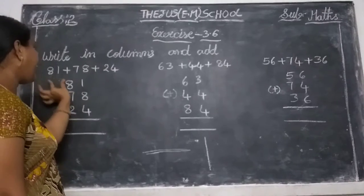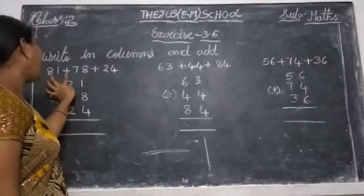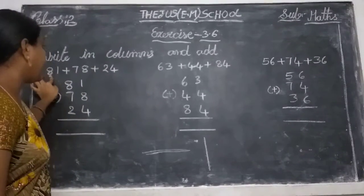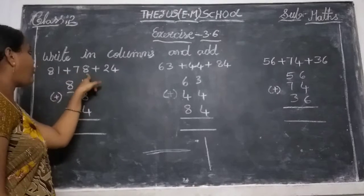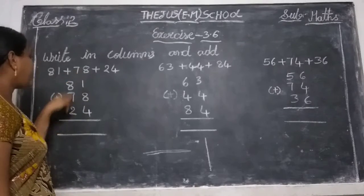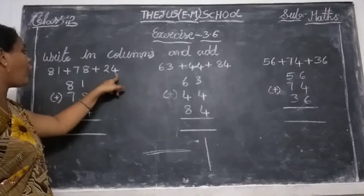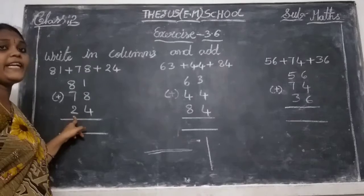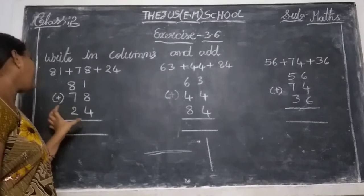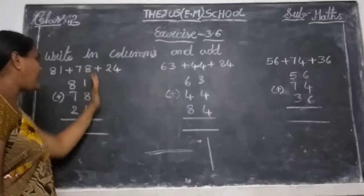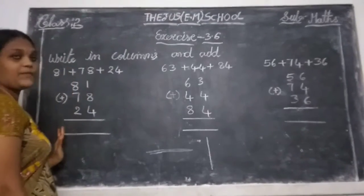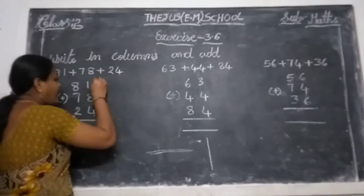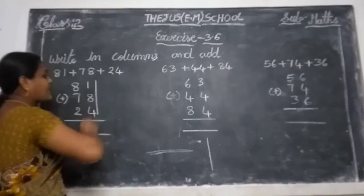See here: first write 81 — ones and tens. Next 78 — ones and tens. Next 24 — ones and tens. Write those numbers in their places — ones place and tens place. Now add first the ones place values.